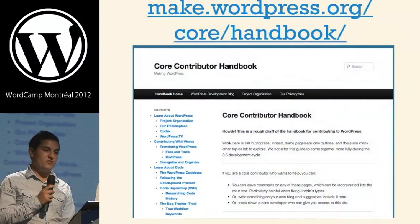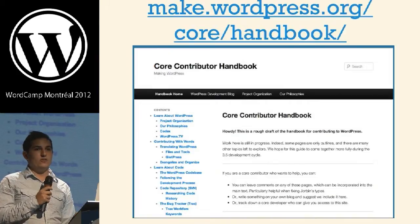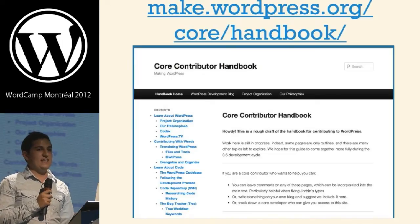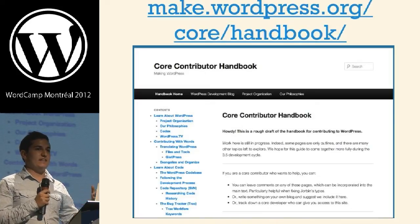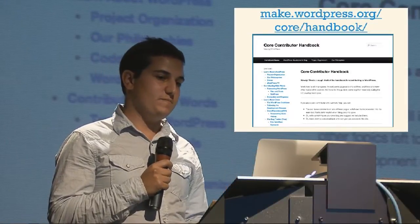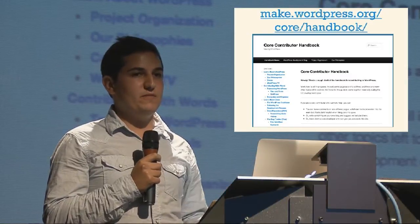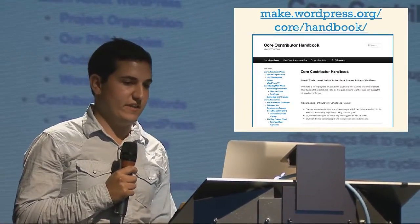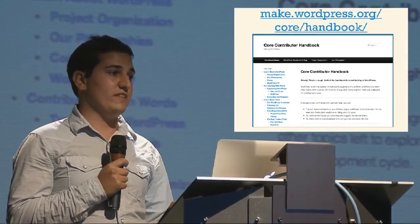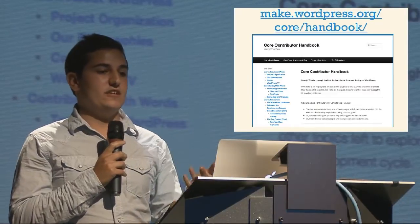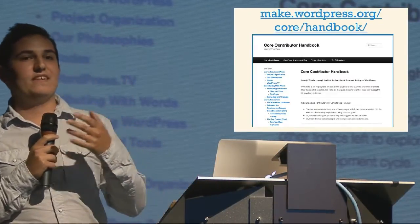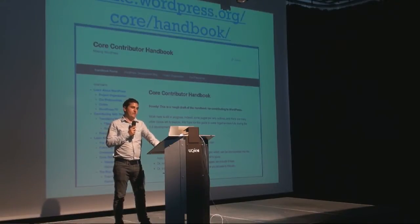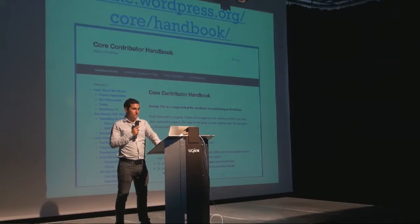The best way to learn how to contribute to core is the core contributor handbook. About two or three weeks ago, make.wordpress.org was reborn as a network of sites bringing different types of contributors into one place — for plugin developers, theme developers, people who want to translate WordPress, contribute to core, accessibility experts, and more. I highly recommend reading the handbook, which goes through the traditions, habits, and methods used to contribute to core.